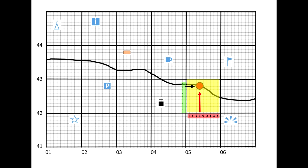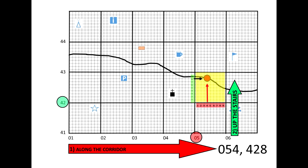Our second example for six-figure grid references is the train station, which is signified by the red dot. Again we're going to go along the corridor — zero five — and we add that additional number for accuracy, so it's zero five four. Then we go up the stairs: four two eight. So the six-figure grid reference for the train station is zero five four, four two eight.